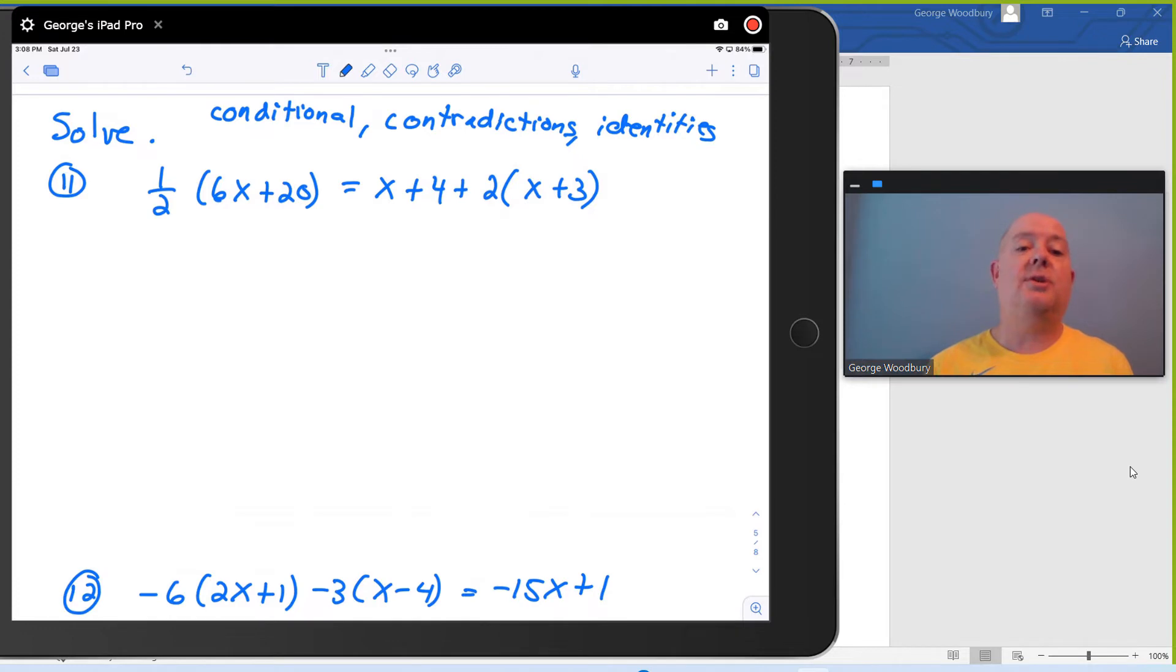So I've got an equation 1 half times the quantity 6x plus 20 equals x plus 4 plus 2 times the quantity x plus 3. And so I know that I need to simplify both sides first, and I've got some distributive multiplication to do. In the last video, we talked about clearing the equation of fractions, which I could definitely do when I look at that 1 half on the left-hand side. However, when I look inside the parentheses, 1 half is going to be multiplied by both 6 and 20, even numbers, they're going to simplify to be whole numbers anyway, so I'm going to be able to avoid having to clear the fractions.